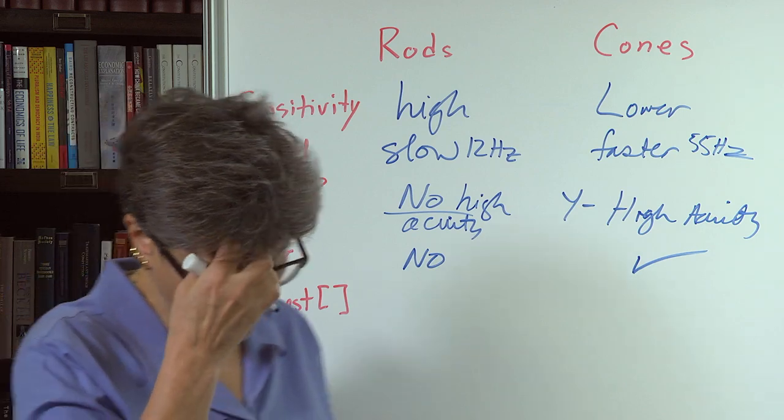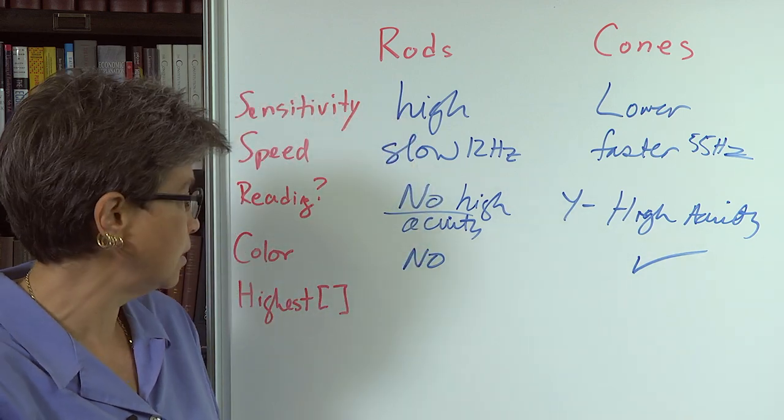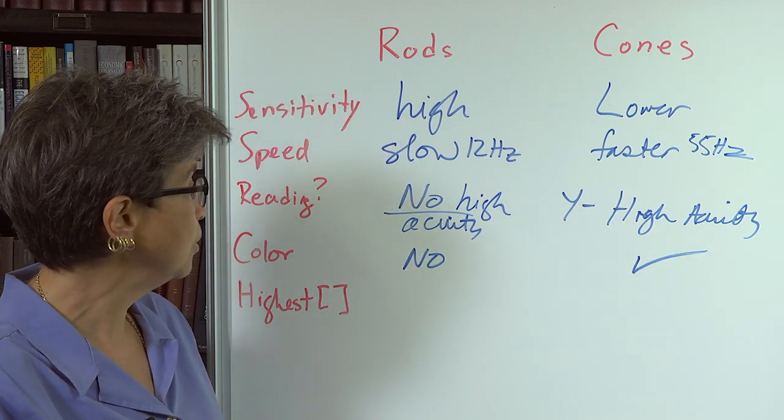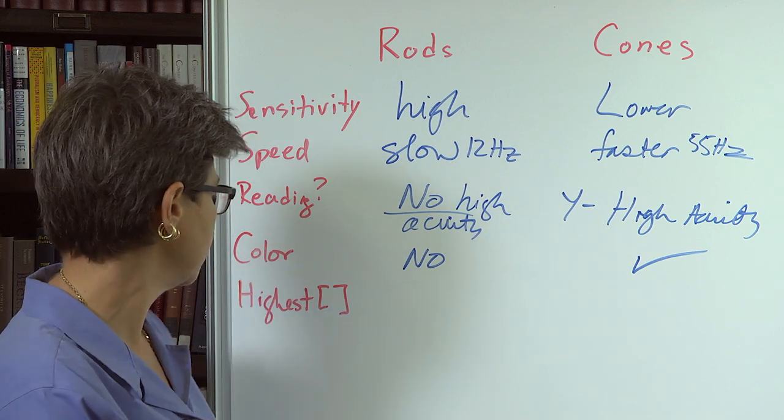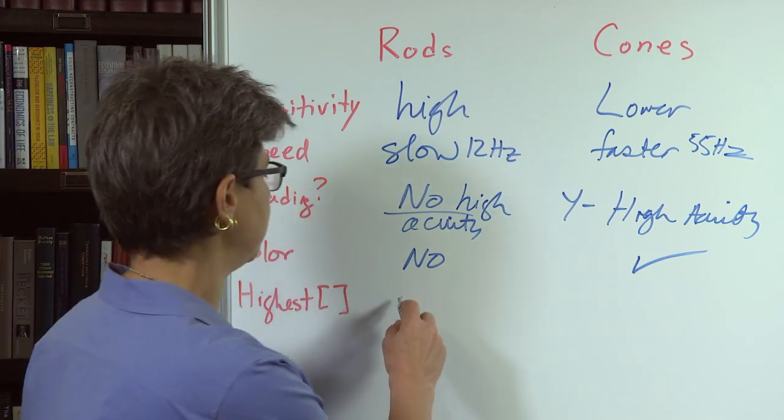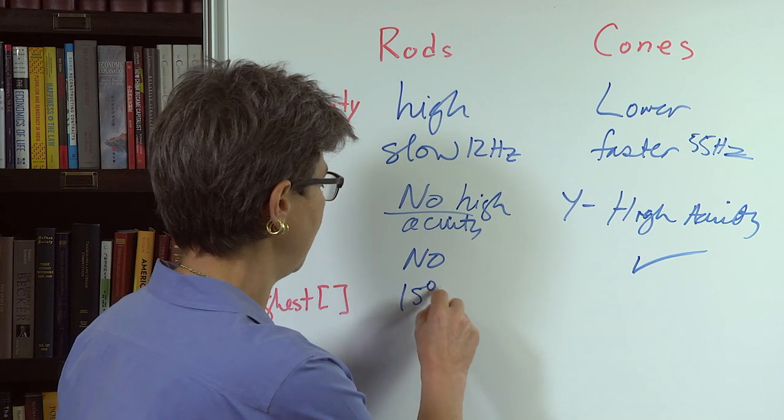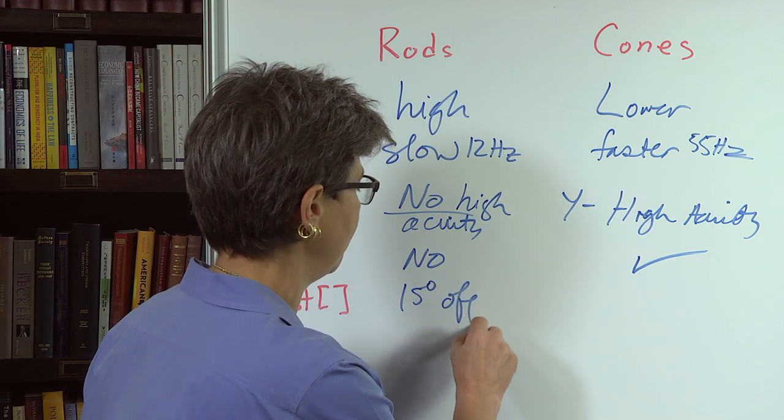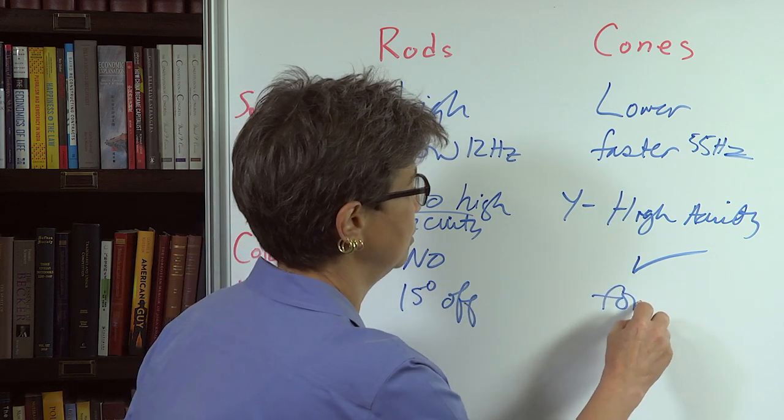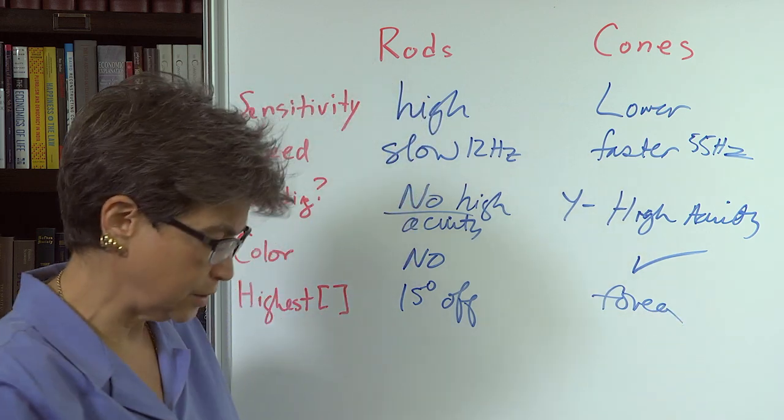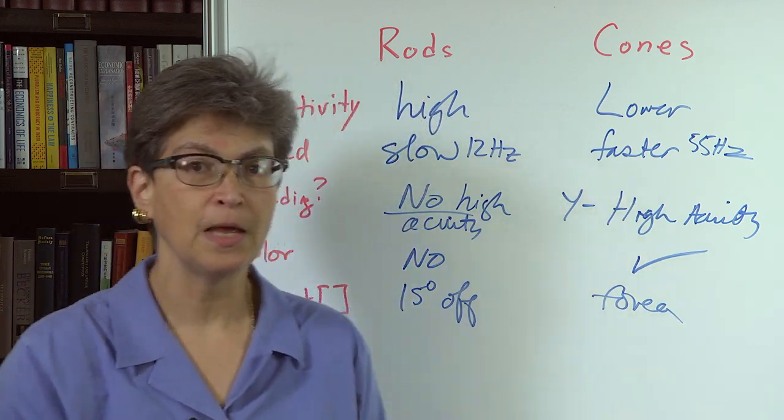So rods, you do not see color using your rods. You can see color using your cones. The highest concentration of rods is 15 degrees off of the fovea. And the highest concentration of cones is at the fovea.